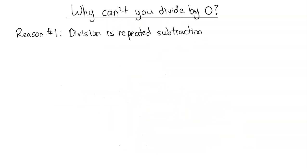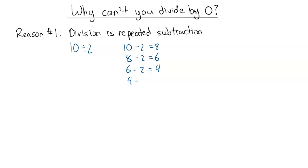The first reason we can't divide by 0 is that division is repeated subtraction. Consider 10 divided by 2: that's just 10 minus 2, however many times we can subtract 2 from it. We go 10 minus 2 and get 8, subtract 2 again and get 6, all the way down until we finally get 0. We can take away 2 five times, so 10 divided by 2 equals 5.